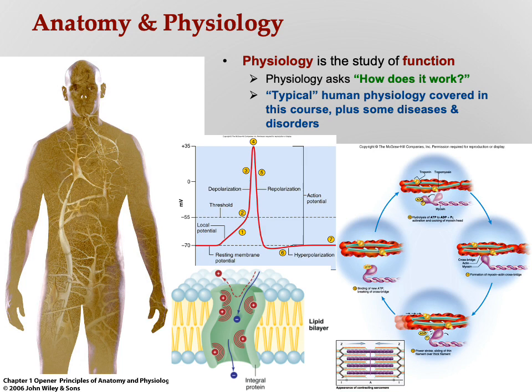Below that we see an ion channel — one that lets anions through but will not let cations through. And on the right, this is muscle physiology: we're looking at the actin and myosin filaments, the troponin and tropomyosin complex, and how calcium allows the myosin head to bind to the myosin binding site on the actin filament.